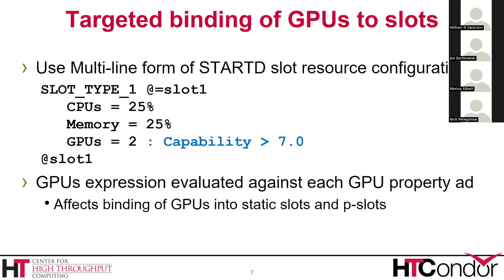So the first step is when you start up, you may wish to decide which specific GPUs are assigned to which specific static and partitionable slots, and this is how you do it. You can actually do this all on one line if you can fit it without any spaces. But because of backward compatibility, the single-line parser for slot types does not allow you to have spaces inside the definition of a particular resource. So we added this multi-line form to give you a little bit more freedom and flexibility. Other than that, it is exactly the same — just a little more forgiving about spaces within a single resource definition.